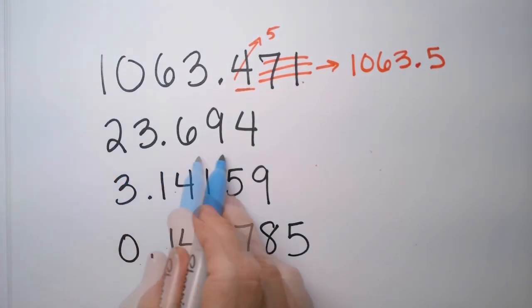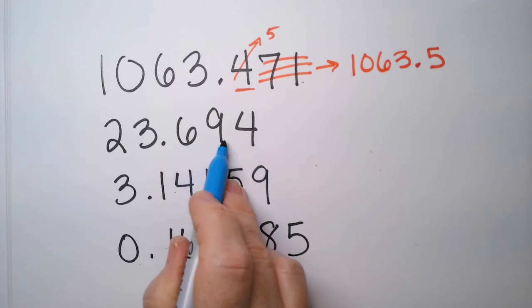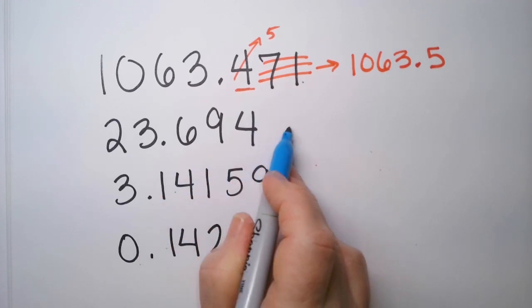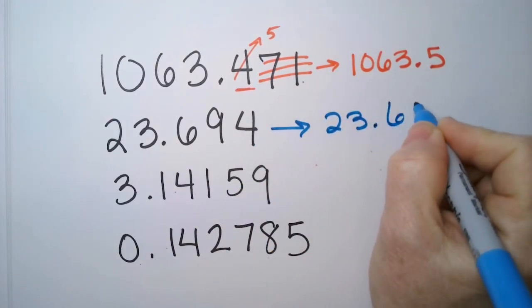I want to round this one to the nearest thousandths. So tenths, hundredths, thousandths. But there's nothing here. So this just stays 23.694.